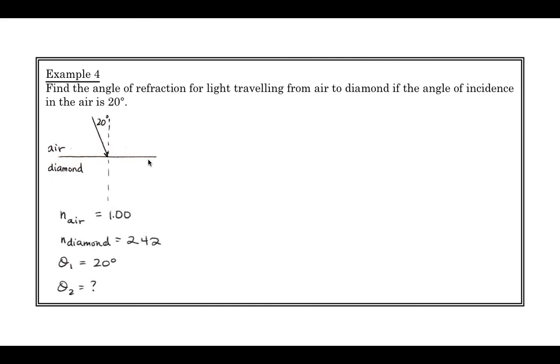So here's what we have. The index of refraction of air is 1. The index of refraction of diamond is 2.42. Angle of incidence is 20, and we want to know the angle of refraction. So we can ask ourselves what it should be. We're going from something less dense to more dense, so we should get a smaller value for theta 2, because we should get bending towards the normal.